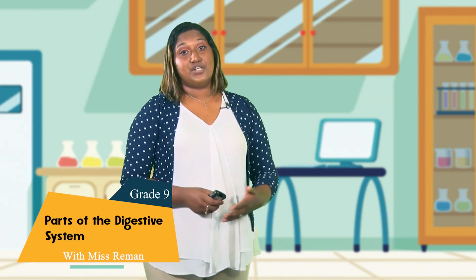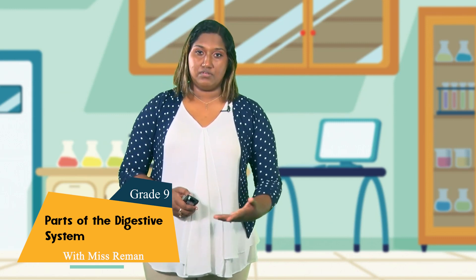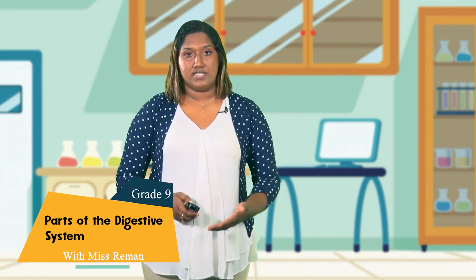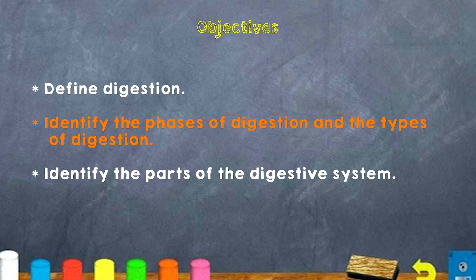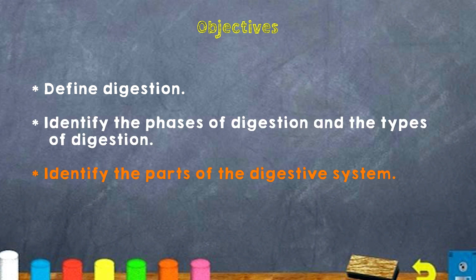Hello boys and girls and welcome to another lesson of science and daily life in the grade 9 classroom. I am Miss Riemann and I'm here to take you on an exciting journey as we explore more on the digestive system. Last session we identified the parts of a tooth and talked about how to care for our teeth. Today our objectives are: 1) to define digestion, 2) to identify the phases of digestion and the types of digestion, and 3) to identify the parts of the digestive system.